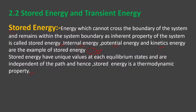From chapter 1, a thermodynamic property must satisfy two conditions. The first one is that each equilibrium state has a particular unique value. The second one is that it is path independent. The value depends only on the initial and final state, not on the path followed.